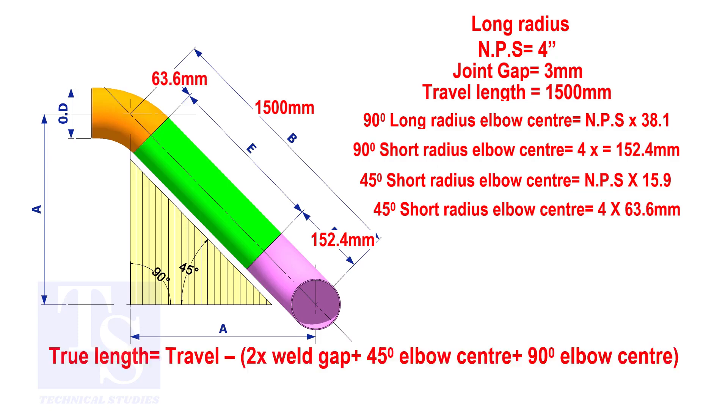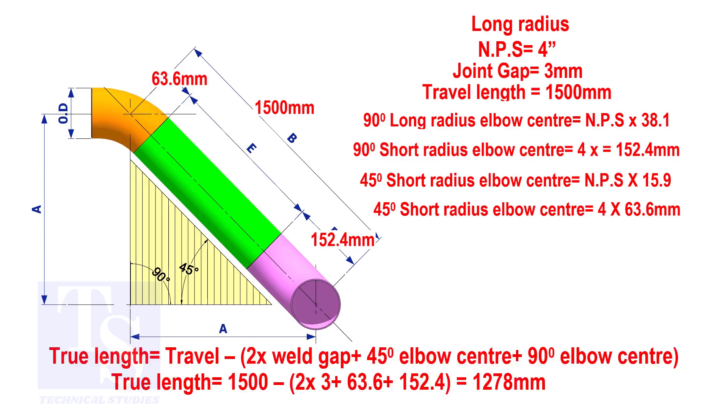Apply the calculation. The true length of the pipe is 1278 millimeters.